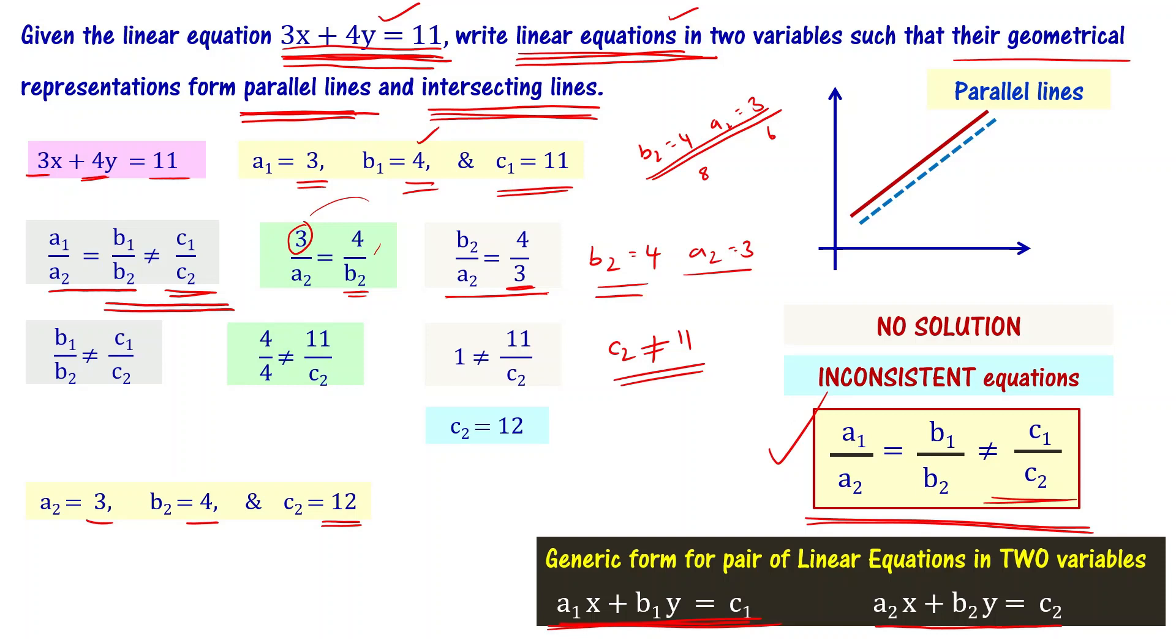Substituting a2 equal to 3, b2 equal to 4, and c2 equal to 12, we get the equation 3x plus 4y equal to 12. When you plot this equation against the original equation, you will get parallel lines.